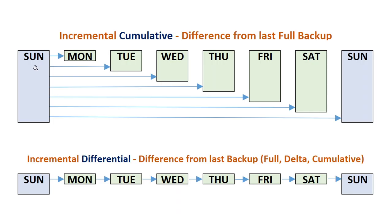To illustrate: suppose you take a level 0 full backup on Sunday. If you take a cumulative backup on Monday, it captures the difference from the last level 0 backup. On Tuesday, if you take another cumulative backup, it ignores Monday's backup entirely — it always captures all changes since the last level 0. So on Wednesday, a cumulative backup captures all changes since Sunday's level 0 backup.